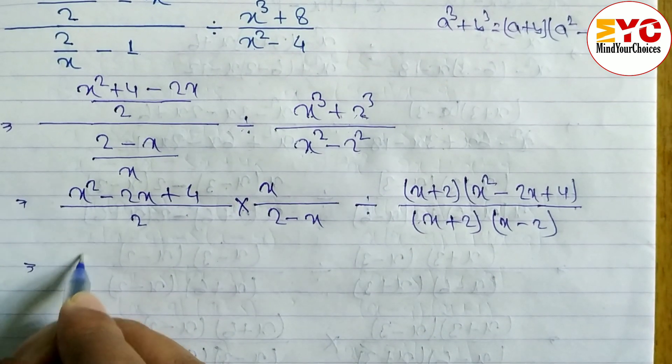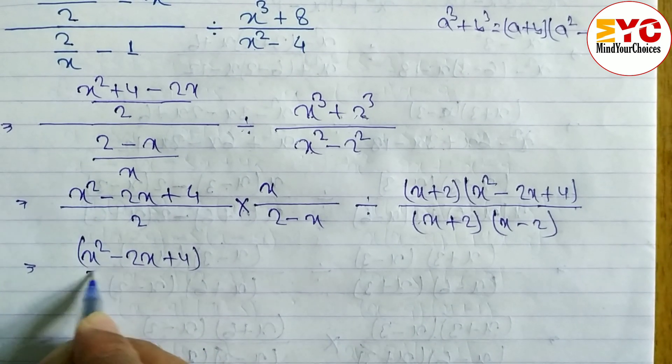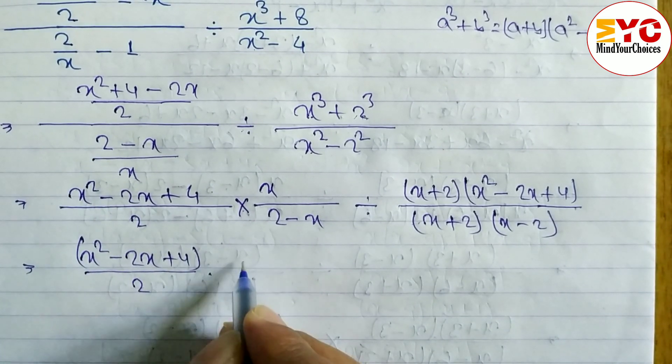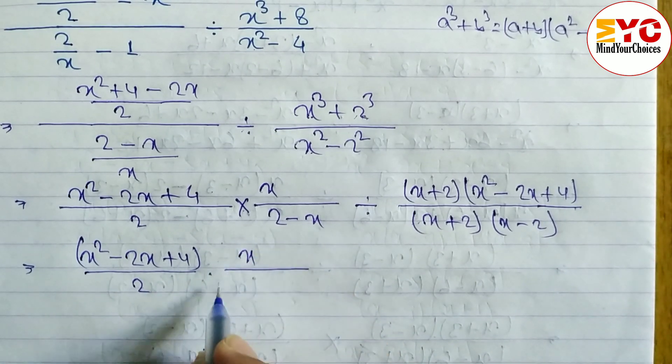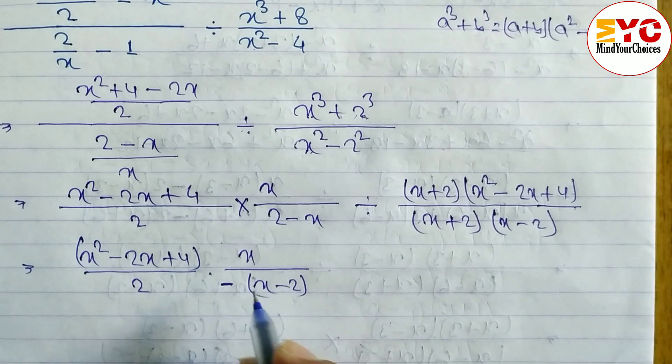After this, x² - 2x + 4 by 2 into x by, if you take here minus common, what we can write here? x - 2. Why to write x - 2? To cancel with this.